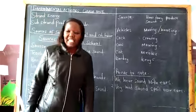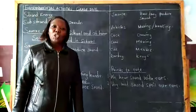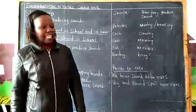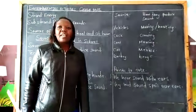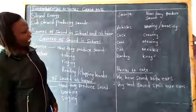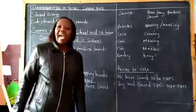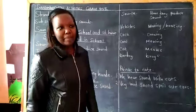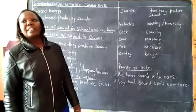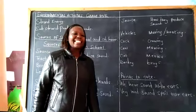We have even donkeys there at home. When they are braying, the sound produced by the donkey is: hee-ho, hee-ho — that is the sound produced by the donkeys at home. We even have drums; when the drums are beaten, they produce sound. Even the radio — we have radio at home; when we hear music from the radio, that is sound.